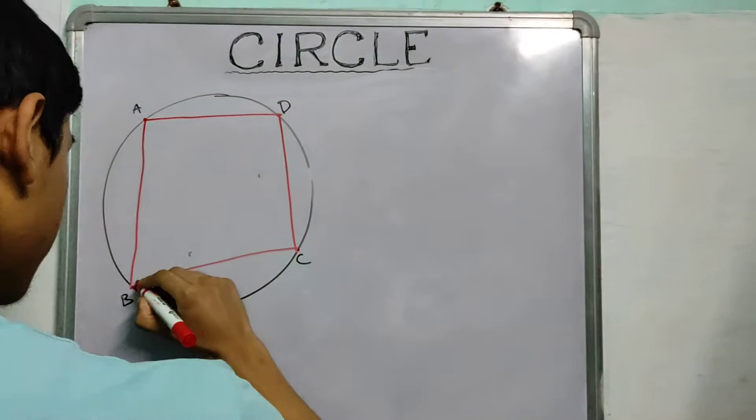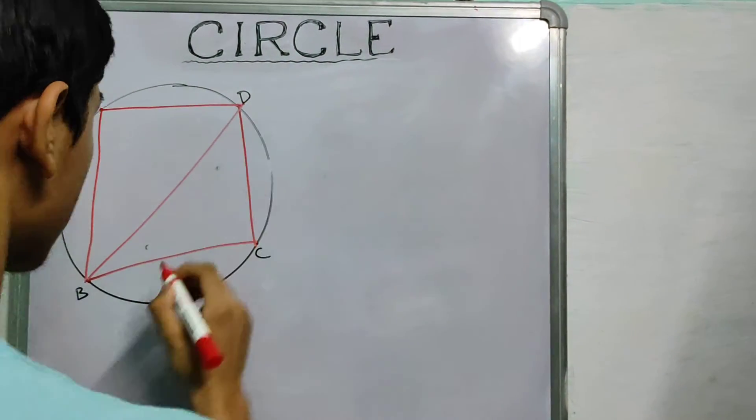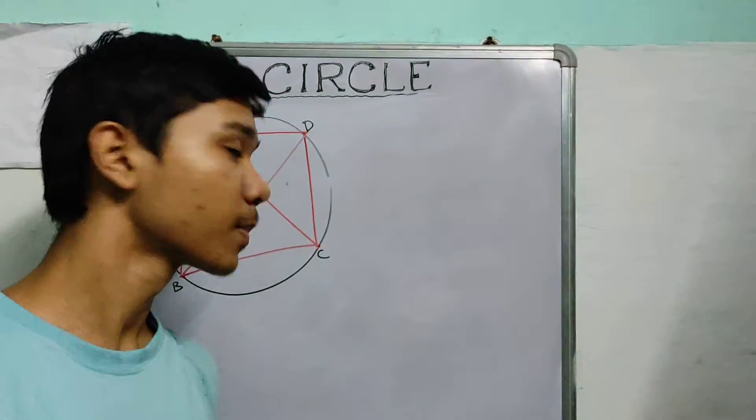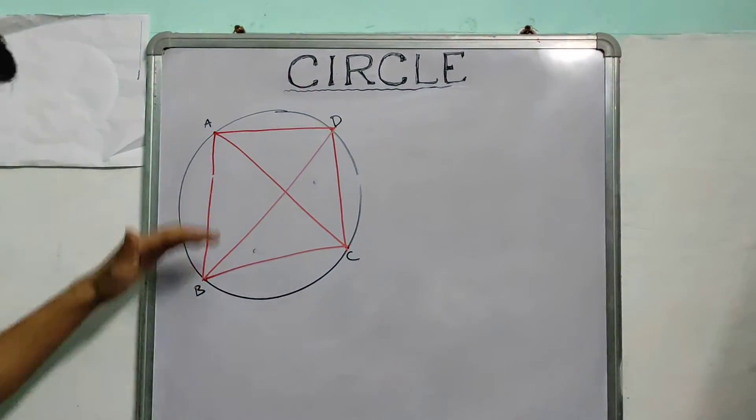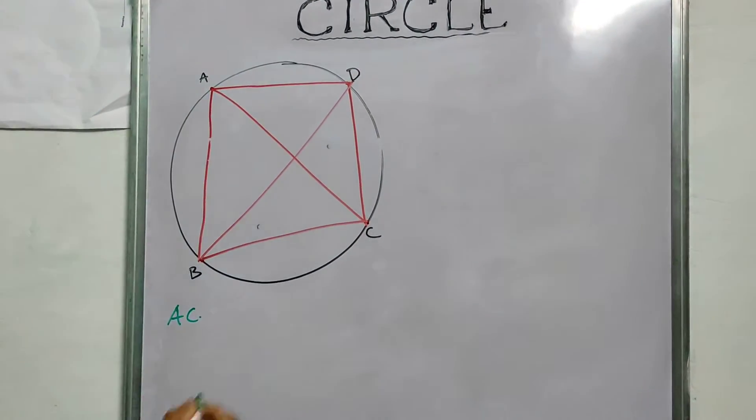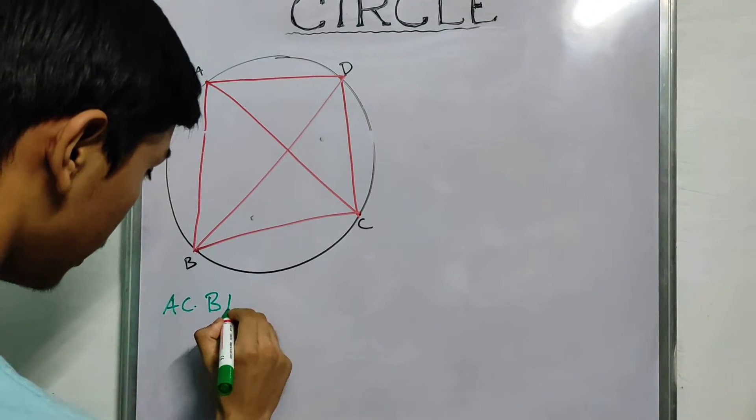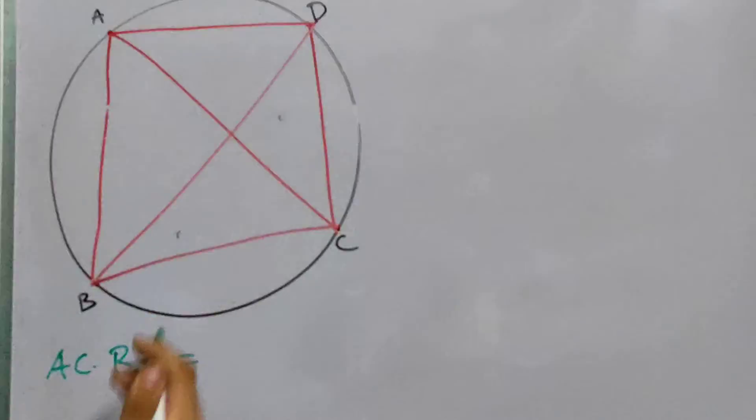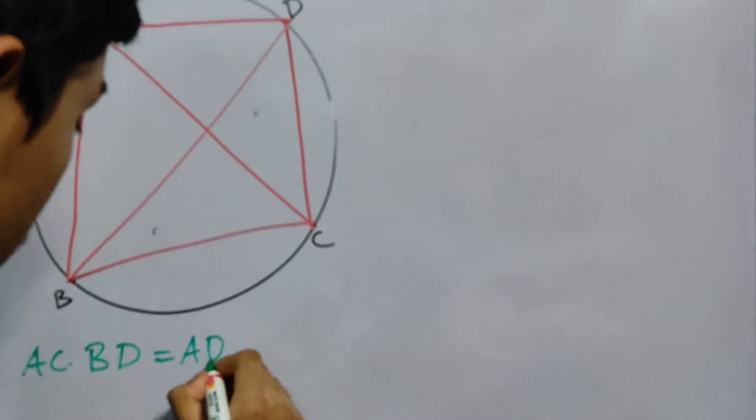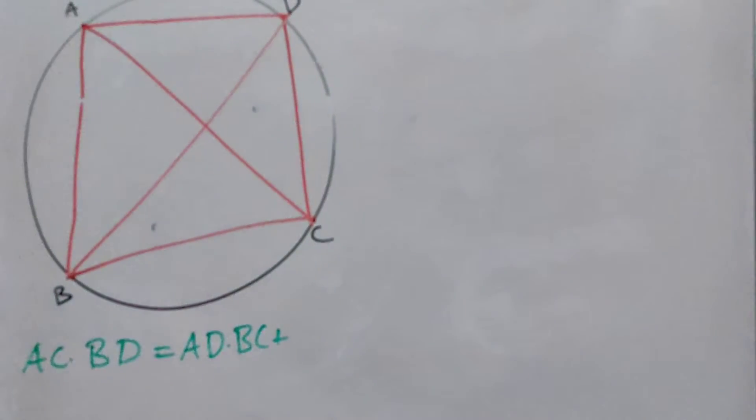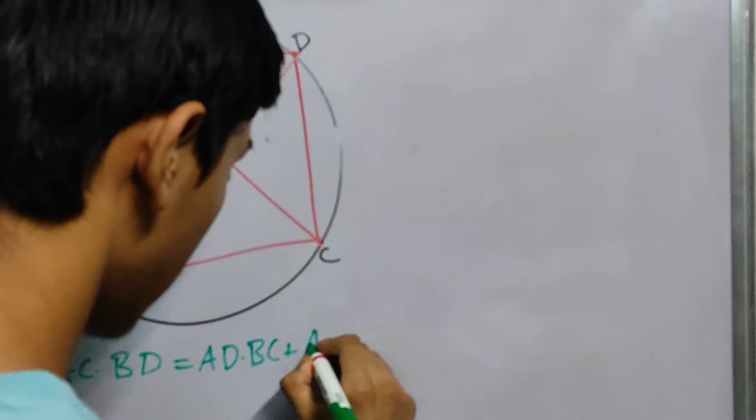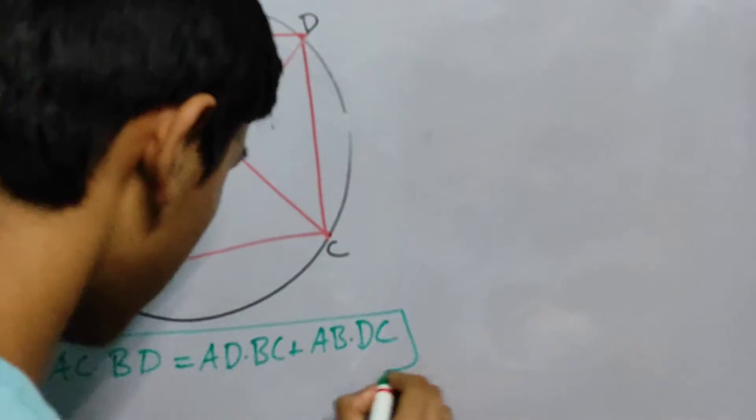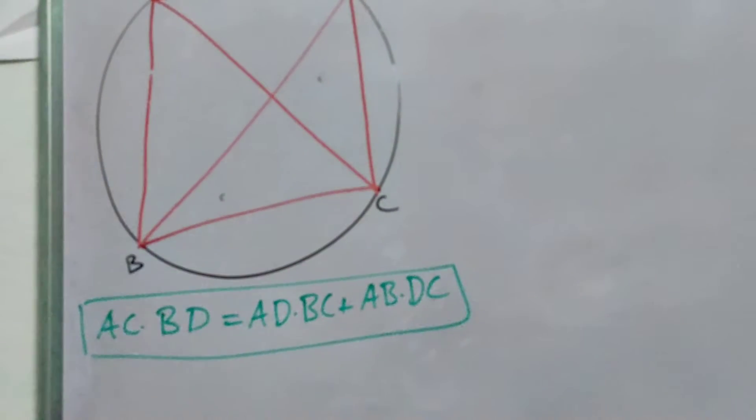Let me draw the diagonals. Now what does the Ptolemy theorem say? It says that the product of two diagonals, AC into BD is equal to the product of sums of opposite sides, AD into BC plus AB into CD. That's what it says, and today we will prove this.